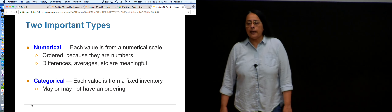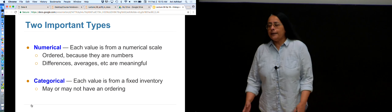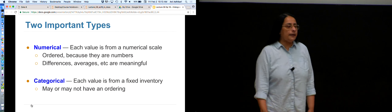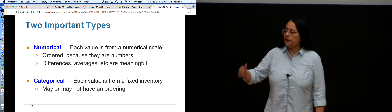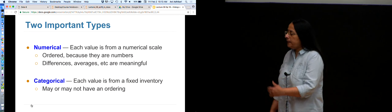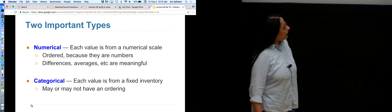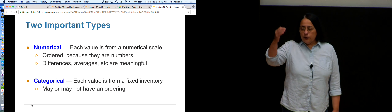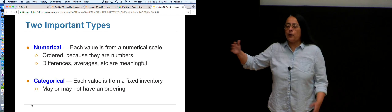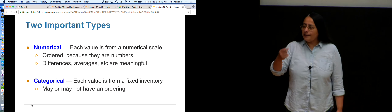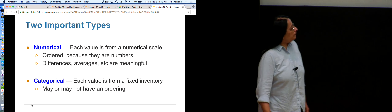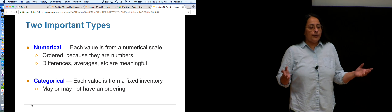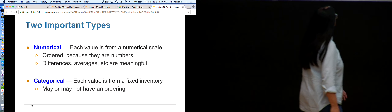Categorical is another common type where the data aren't numbers - they are categories. It could be your favorite color, ethnicity, which year you are in school: freshman, sophomore, junior, senior. Or not satisfied, somewhat satisfied, highly satisfied. That last one has a natural ordering, as does freshman through senior, but vanilla, chocolate, strawberry doesn't necessarily have an ordering.